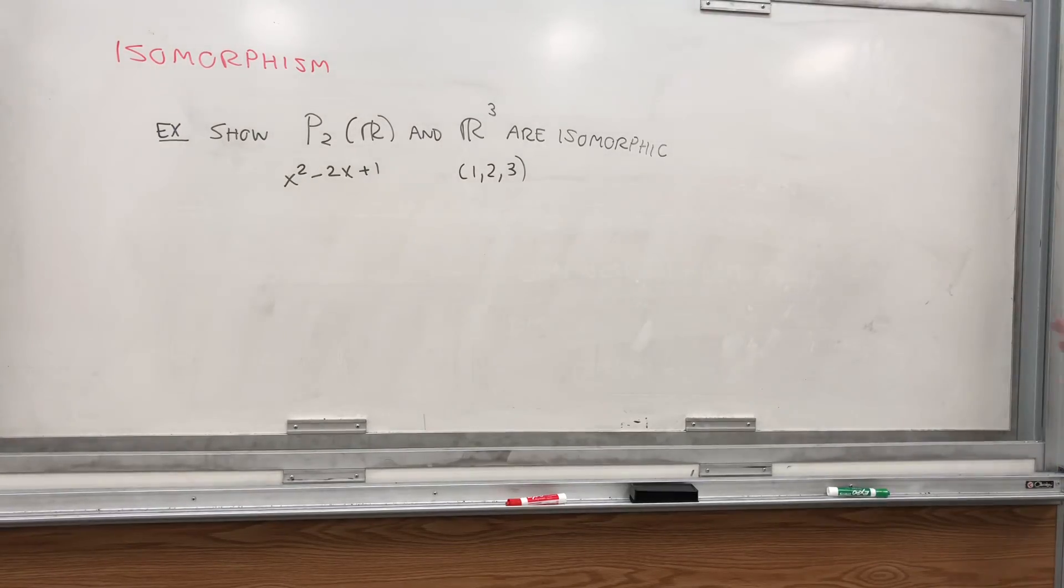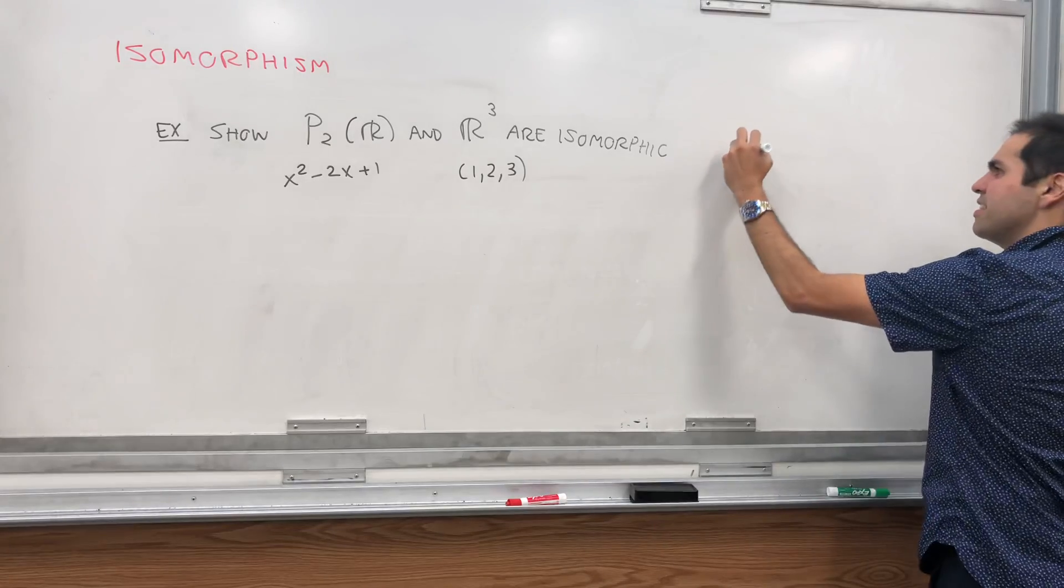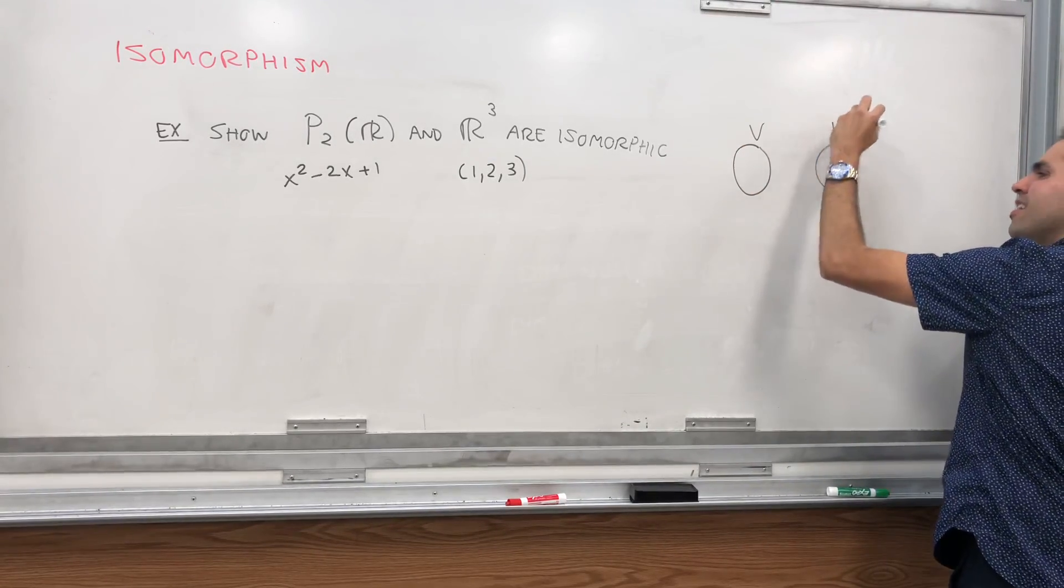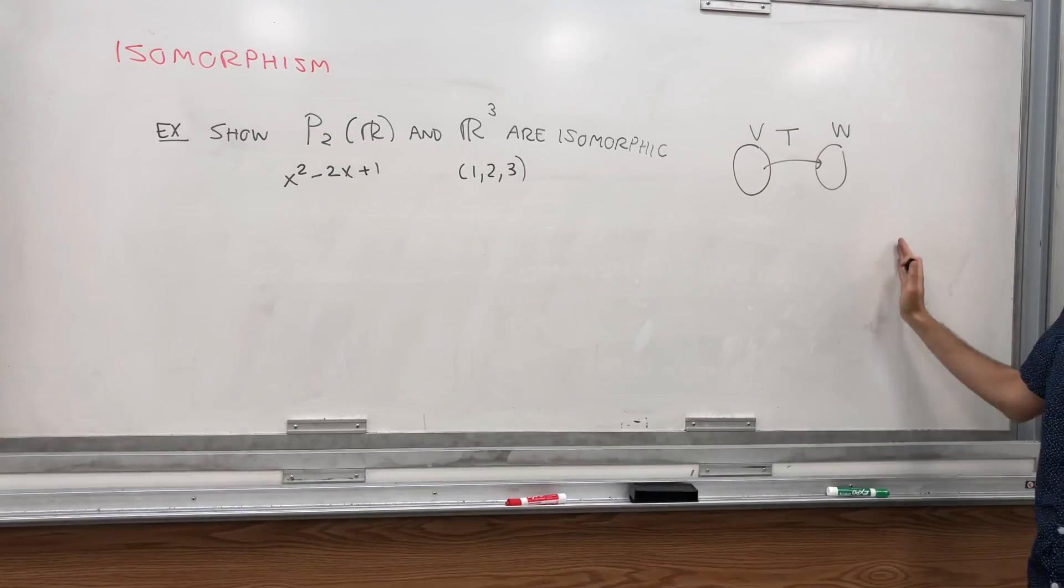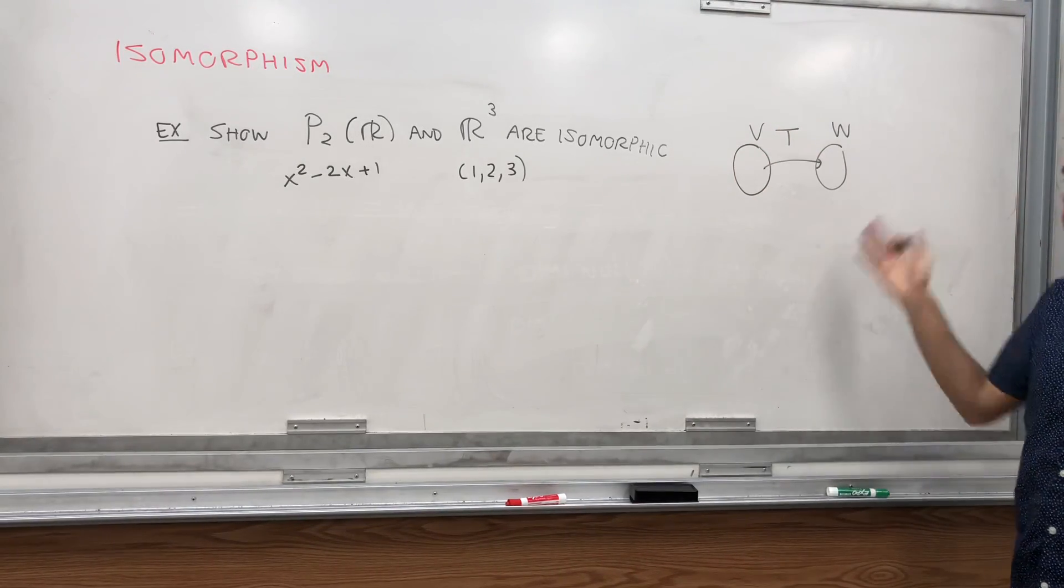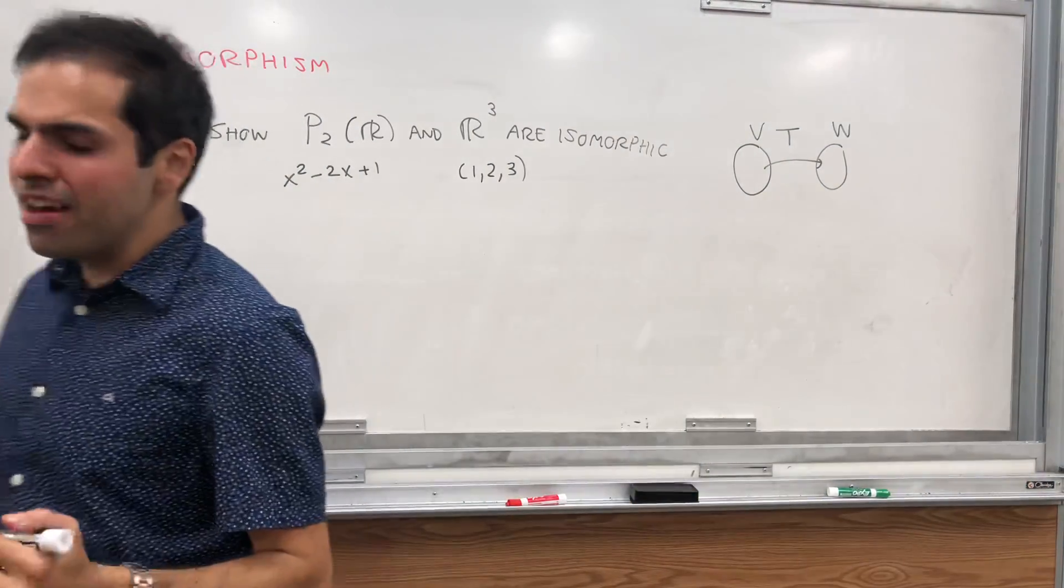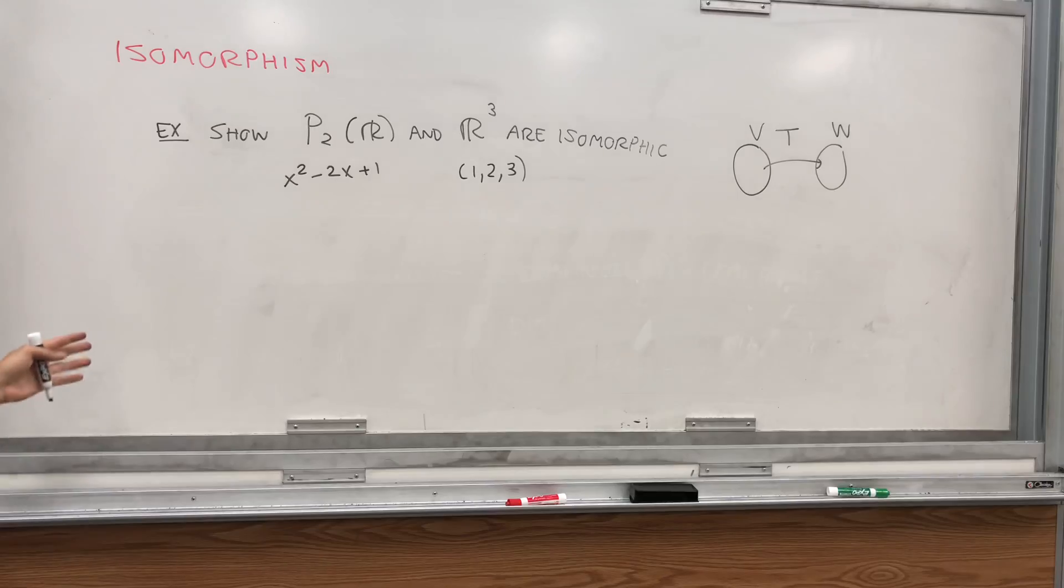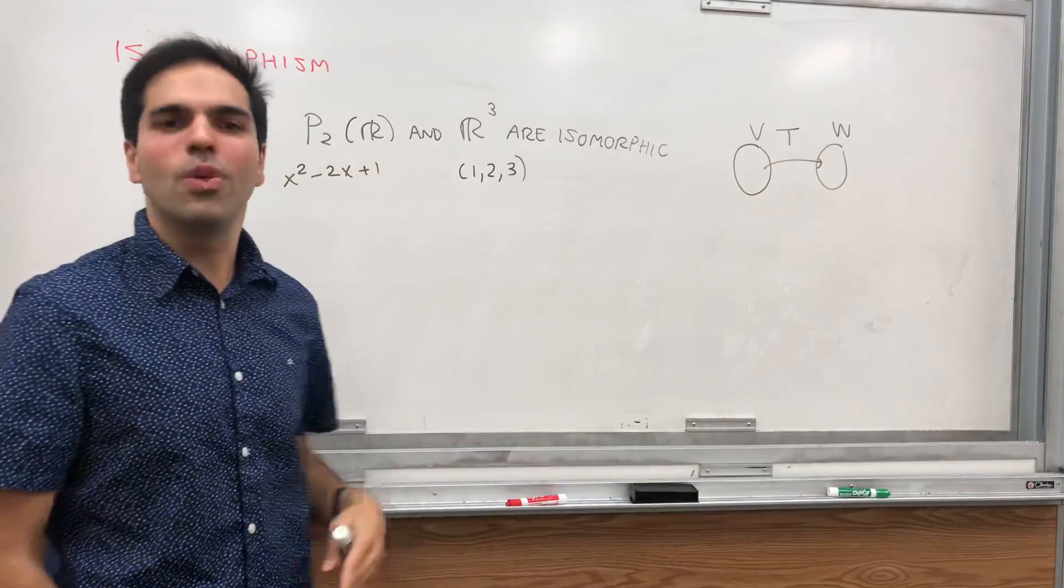What does it mean for two spaces to be isomorphic? What it means is they have the same form, which means that there is a linear transformation between V and W that is invertible. And remember, or maybe I'll do a video on that, invertible is the same thing here as one-to-one and onto.